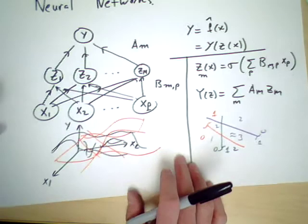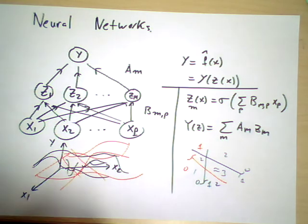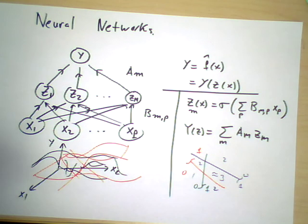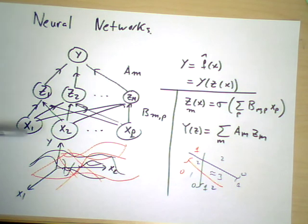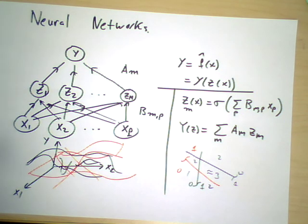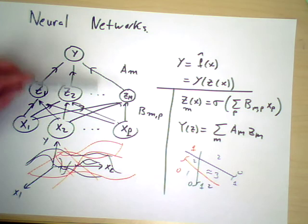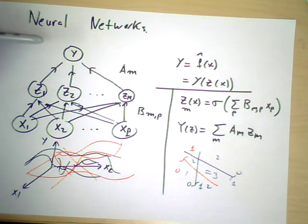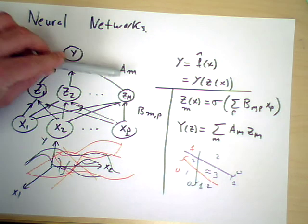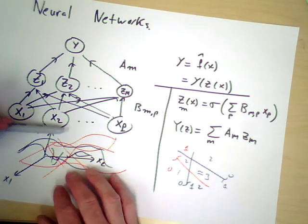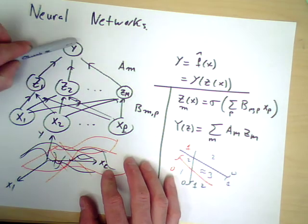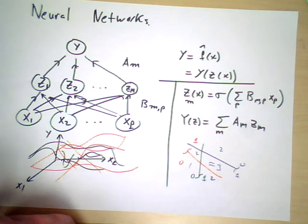This system is called a feed-forward neural network solved by back propagation. It's feed-forward because information moves from X's to Z's to Y's. Back propagation means: when you choose a's and b's, compute outputs, get error on Y, that error tells you how to adjust a, which shows you how to adjust b — so the error propagates backwards. The loop of computing forward and moving the error back for gradient descent is back propagation.